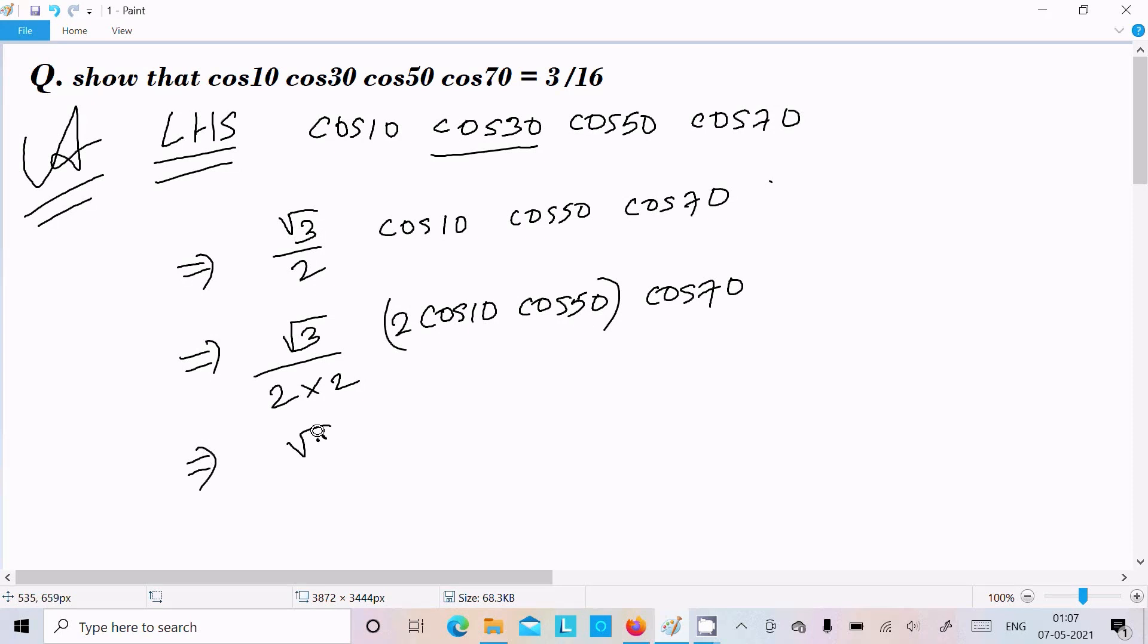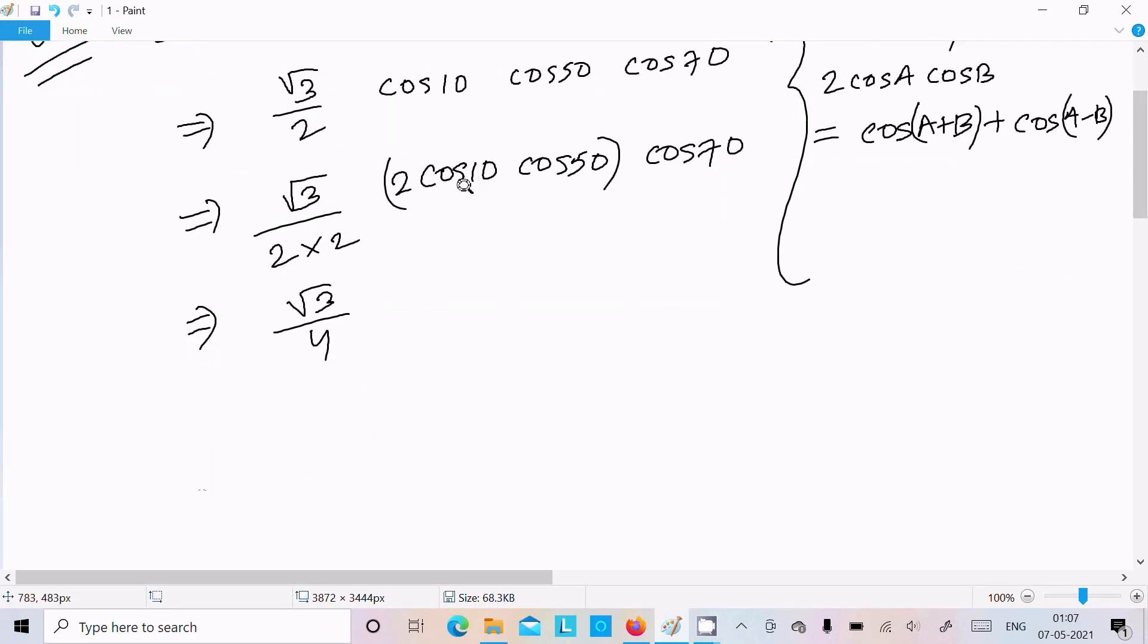Now thereafter root 3 by 4. So here we require the formula 2 cosA into cosB, that is cosA plus B plus cosA minus B. So here suppose this is cosA, here cosB. So we can write here cosA plus B, 10 plus 50, plus cosA minus B, 10 minus 50.